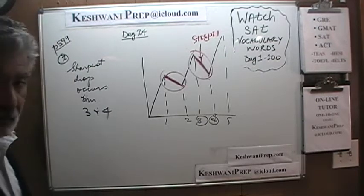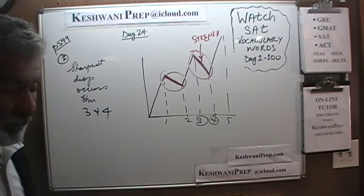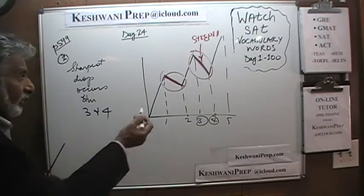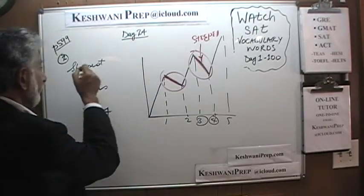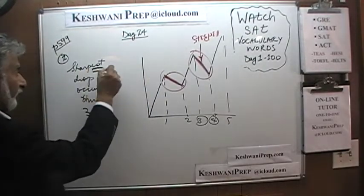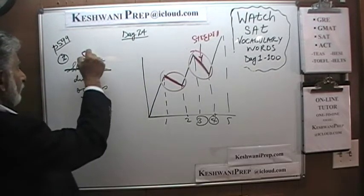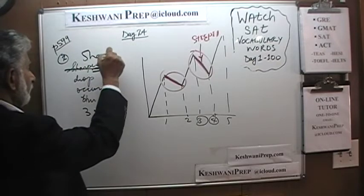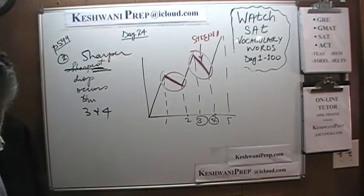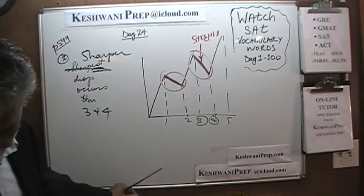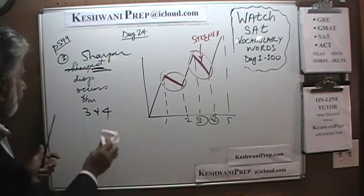To be more precise, with proper grammar: because there are only two drops, it should not be 'sharpest' — that's superlative. It's actually 'sharper,' because there are only two of them. Anyway, that's number two.